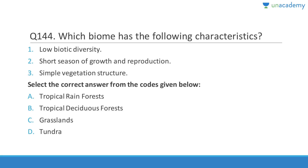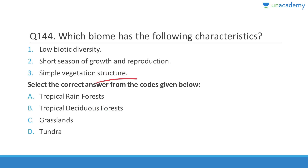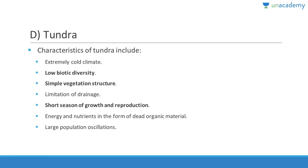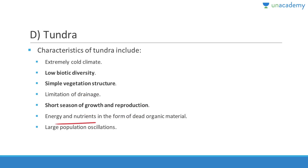The tundra biome has low biotic diversity, short season of growth and reproduction, and simple vegetation structure. Most of the time it is covered with snow. Characteristic features of tundra include extremely cold climate, low biotic diversity, simple vegetation structure, limitation of drainage, short season of growth and reproduction, energy and nutrients in the form of dead organic material, and large population oscillations.